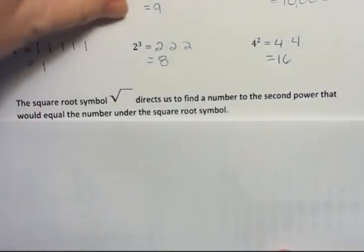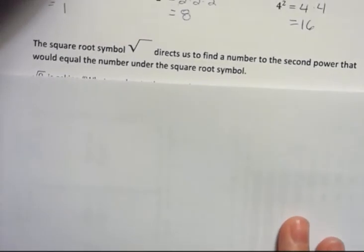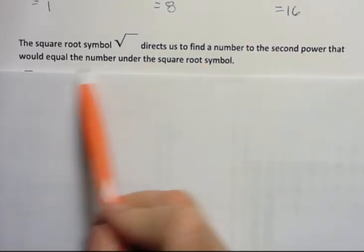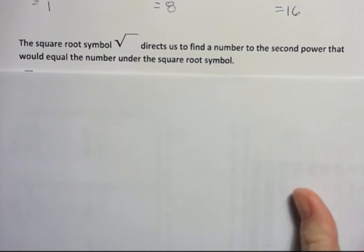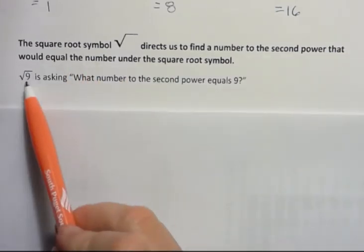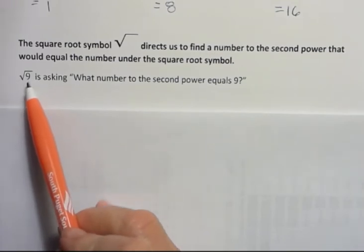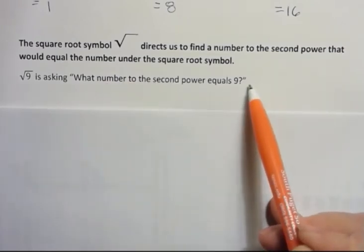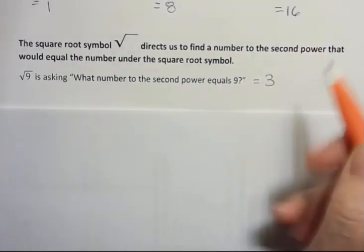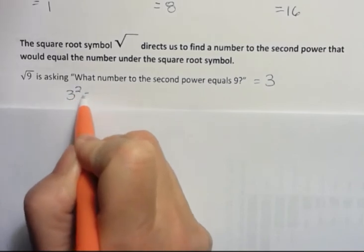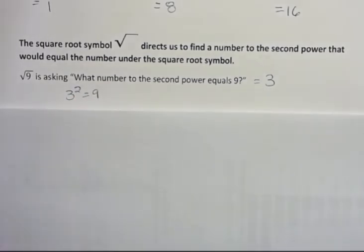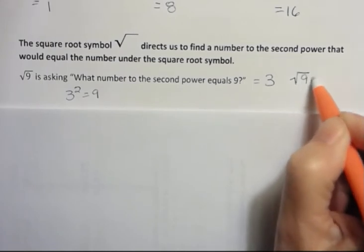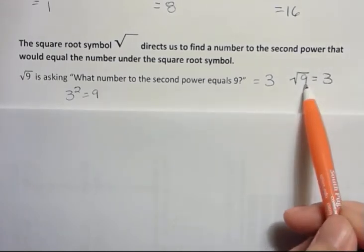Now we're going to talk about square roots. Square roots are kind of an unwinding or a reverse direction of exponents. A square root symbol directs us to find a number to the second power that would equal the number under the square root symbol. That number is called the radicand. The square root of 9 is asking: what number to the second power equals 9? I know that would be 3, because 3 to the second power equals 9. So the square root of 9 is 3.